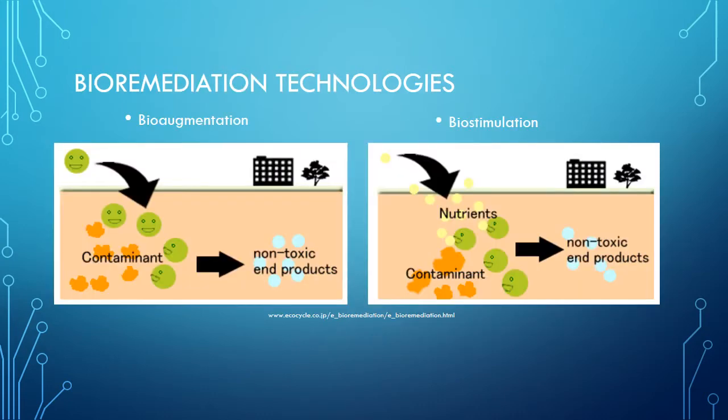Oil spills can be remediated by bioremediation, and bioremediation can be enhanced by bioaugmentation, biostimulation, or a combination of the two. In bioaugmentation, single strains or mixed cultures with or without genetically engineered organisms are added to the site of interest. The purpose is to introduce more or different microbial species into the environment to better reduce the oil than the natural flora can achieve. Biostimulation refers to the addition of nutrients and electron receptors such as nitrogen, oxygen, or phosphorus, that may otherwise be acting as a limiting nutrient in the biological degradation of the contaminant.